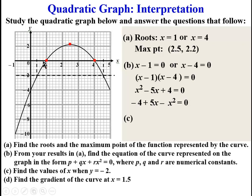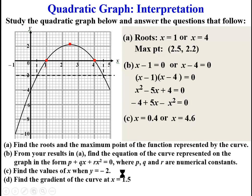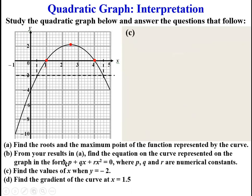The first point here corresponds to this on the X-axis, and the second point here — counting the lines, each line is 0.2 — so X is equal to 0.4 or X is equal to 4.6. So these are the values of X when Y is equal to negative 2.